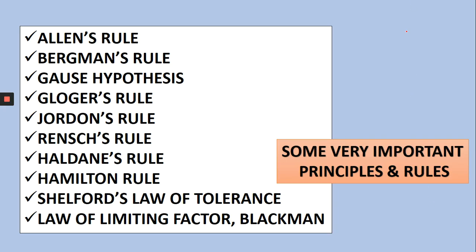So basically, if I talk about the important rules we have already covered: Alline's rule, Bergman's rule, Gauss hypothesis, Gronger's rule, Jordan's rule, and Renz's rule — these have already been discussed.